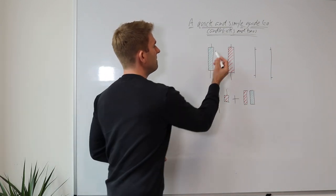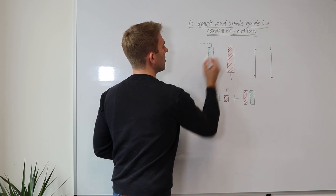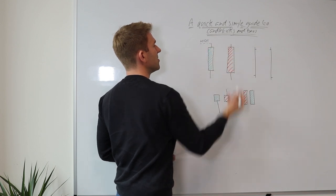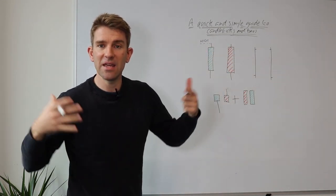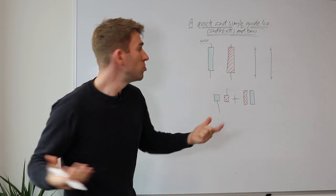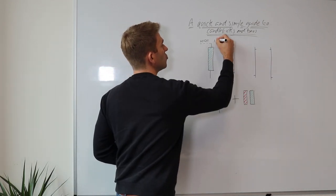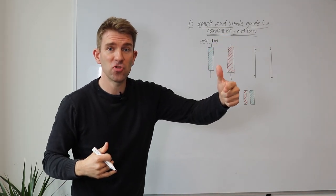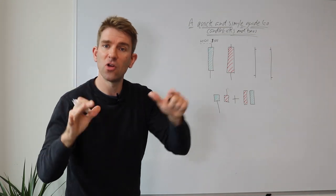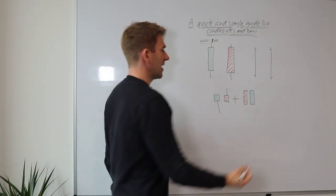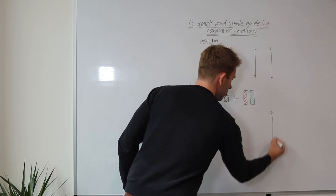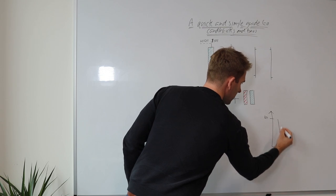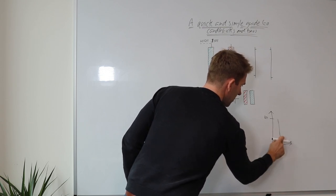In one trading day, the very top of the candlestick shows how high the instrument has gone — sometimes we call that the wick, sometimes the tail. This is the high of the trading day. So imagine a stock went up to $101 during the day and didn't go a cent higher — that $101 would be the high of your candlestick.